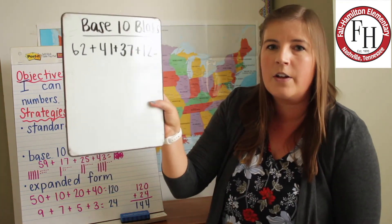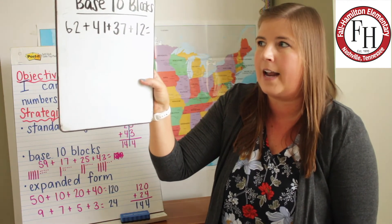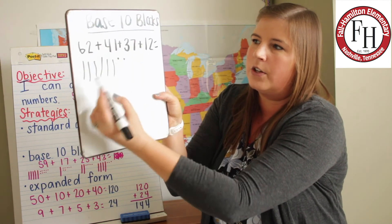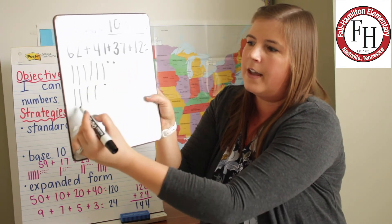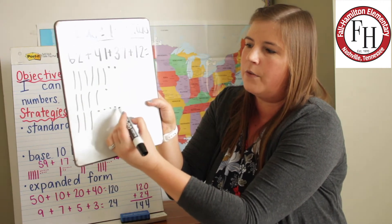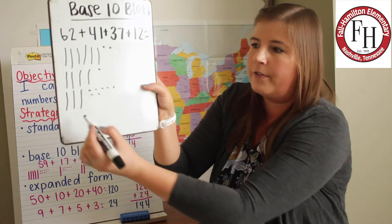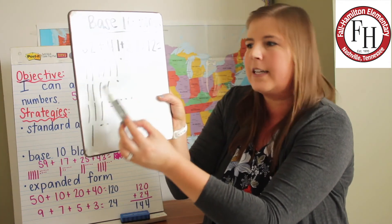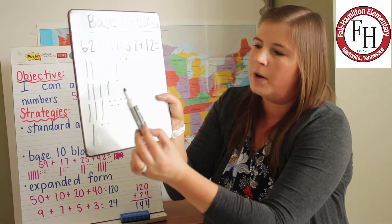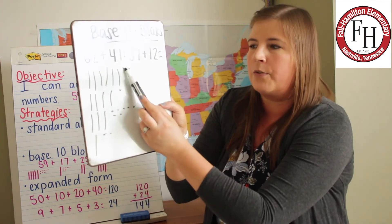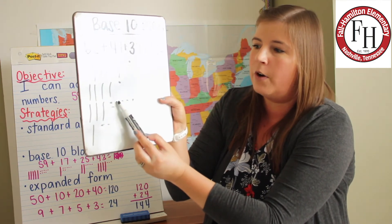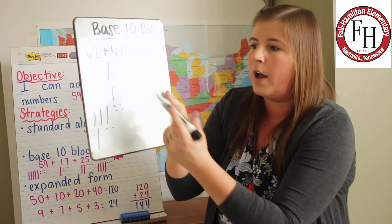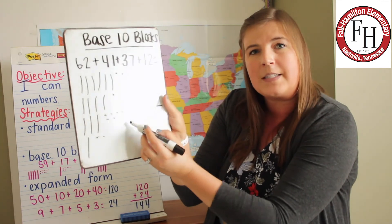Now one more problem for base ten blocks. To add my base ten blocks, first I need to draw them in base ten. I'll draw 62, 41, 37, and 12 using tens and ones blocks. I'm going to add up all of my tens first: 10, 20, 30, 40, 50, 60, 70, 80, 90, 100, 110, 120, 130, 140. I'm going to keep counting on by ones up to 152. So I drew them in base ten and then I counted them up.